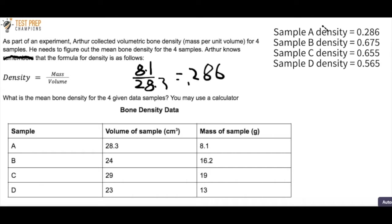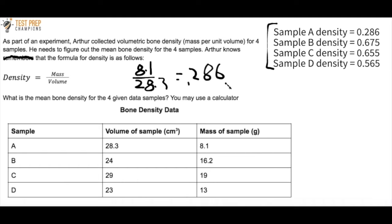If you repeat that process for samples B, C, and D, you should get these values — maybe a little different depending on how you round, but not much different. You should get 0.675, 0.655, and 0.565. All you're doing is taking the mass and dividing by the volume. For B, to get that 0.675, you would have done 16.2 divided by 24. Just repeat the process applied in A.